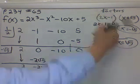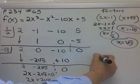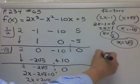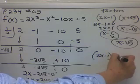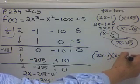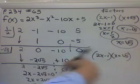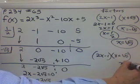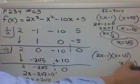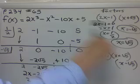And if I want to write them as factors, remember, the first one I had 2x minus 1 was a factor. x plus root 5 was a factor. So this one is x minus root 5. So those are the three factors for this equation.